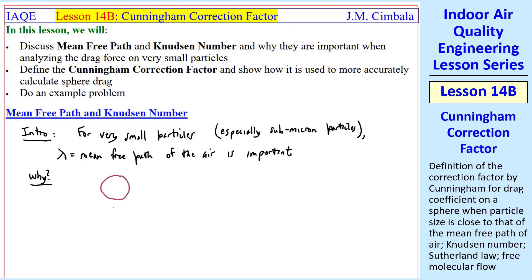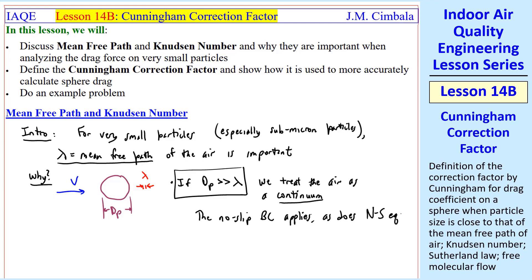Why? Consider a small spherical particle of diameter dp in a flow of air. If dp is much greater than the mean free path lambda, suppose lambda is very small compared to dp, we treat the air as a continuum, which means we don't have to consider individual air molecules. It's just this fluid surrounding the particle. The no-slip boundary condition applies then, as does the Navier-Stokes equation, with standard definitions of viscosity, density, etc.